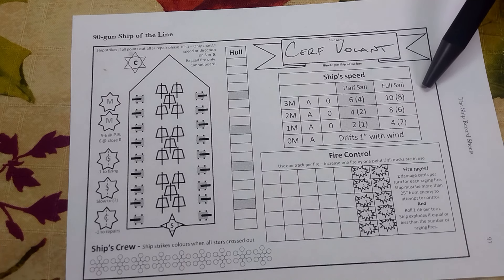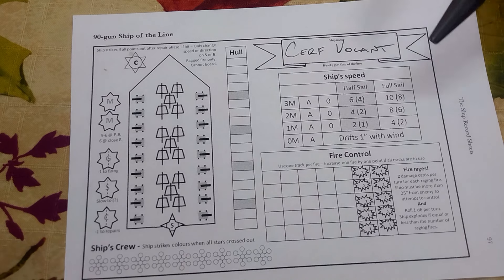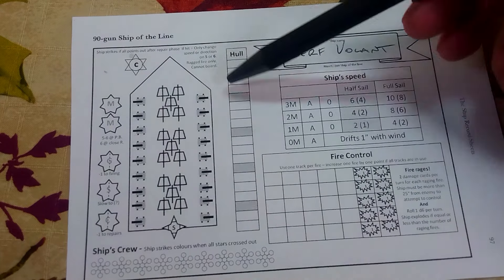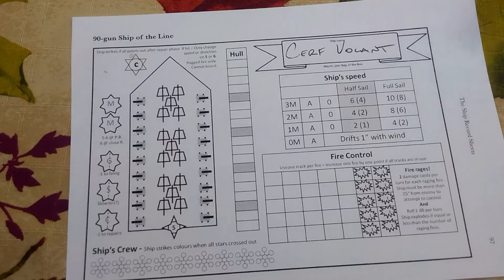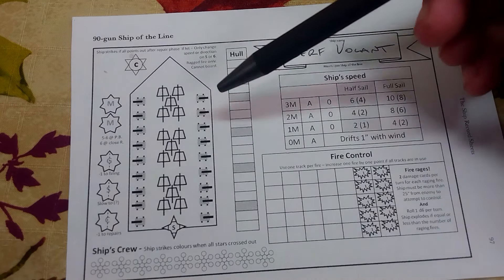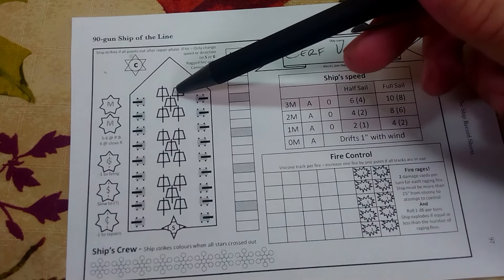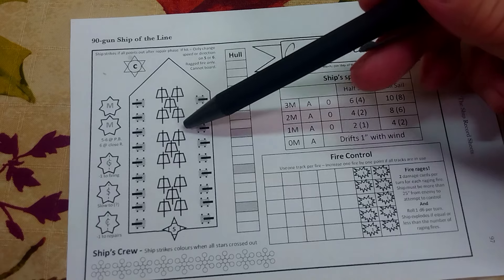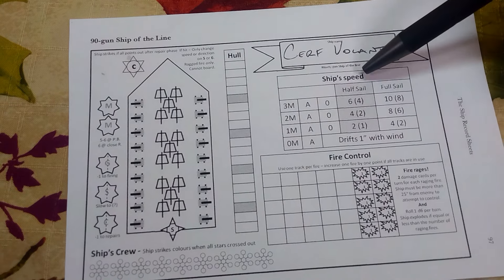Allow me to introduce you to one of the vessels that we'll be taking to the open seas in our next video. This is a French ship. It is the Cerf Volant 90-Gun Ship of the Line, one of Napoleon's finest. And this is a little complicated. And this is why I want to go through how you play the game before we get to it. First thing to understand is this is a lot like Car Wars in that you're going to start crossing stuff off. And the more you cross off, the worse shape your vessel is in.